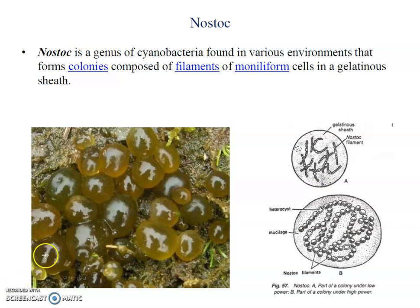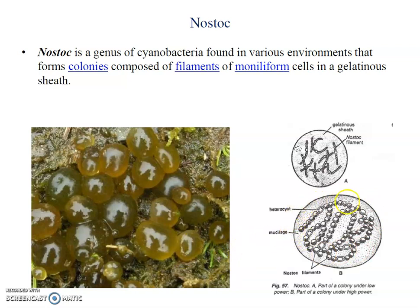These are the colonies of Nostoc. In these colonies, a filament-like body structure forms. Many filaments come together and form a colony. In a single ball of Nostoc colony, there are thousands of Nostoc filaments. It looks like a ball — thousands of filaments of Nostoc making up a colony.